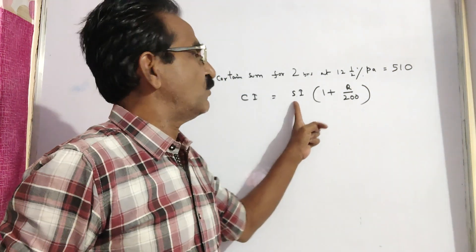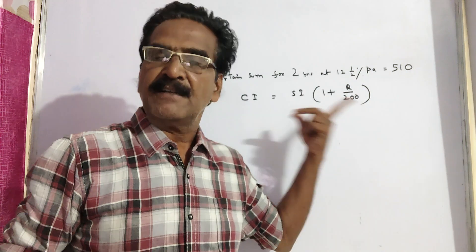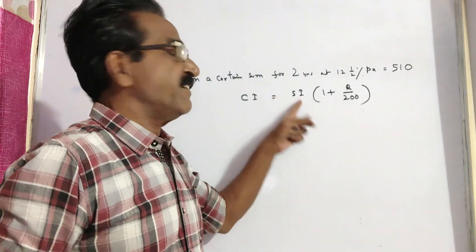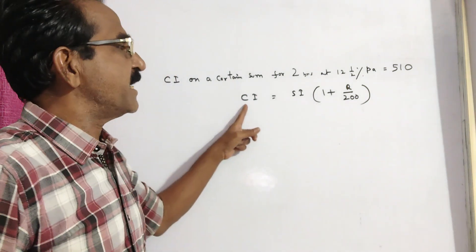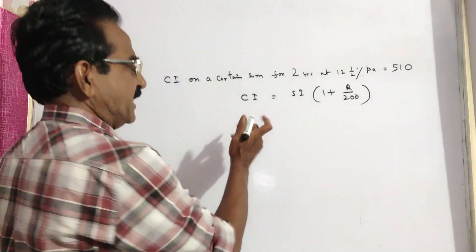is CI equals SI into 1 plus R by 200. From this formula, you can find SI when CI is given, and CI when SI is given. Now, CI is given, we have to find SI.